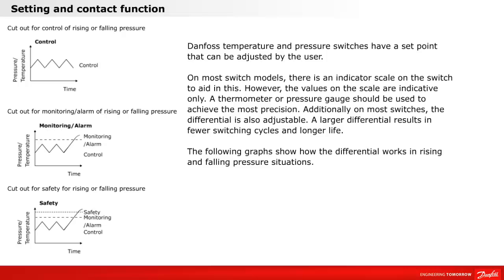Danfoss temperature and pressure switches have a set point that can be adjusted by the user. On most switch modules, there is an indicator scale on the switch to aid in this. However, the values on the scale are indicative only. A thermometer or pressure gauge should be used to achieve the most precision.